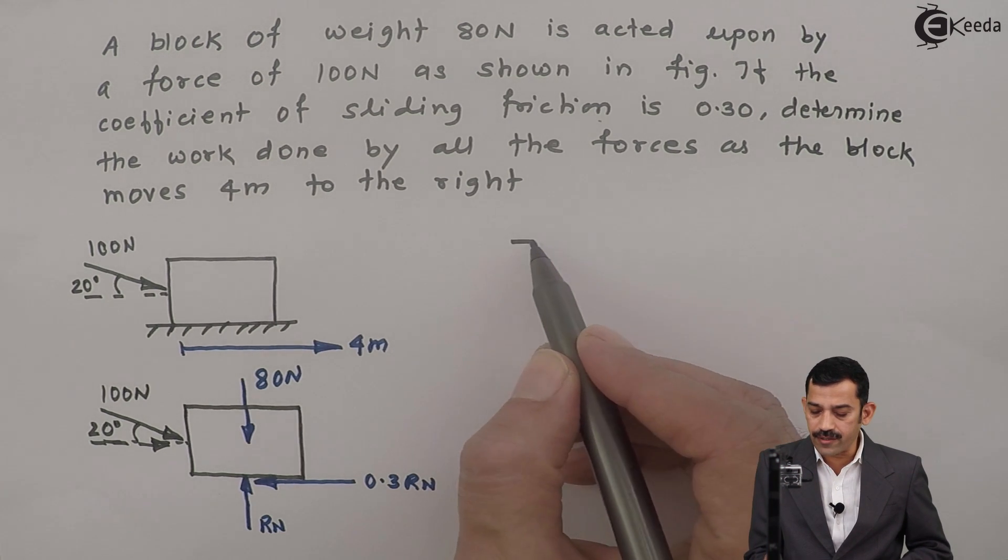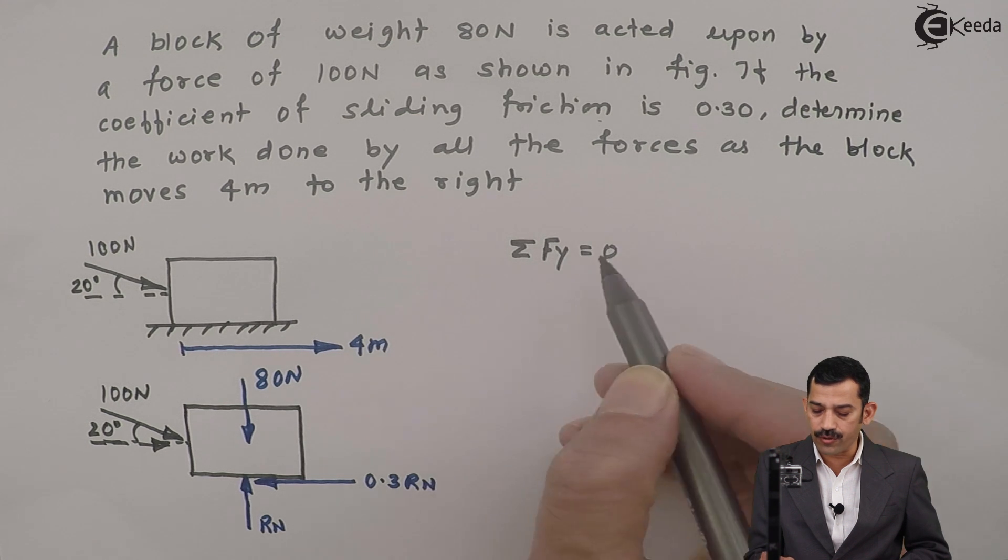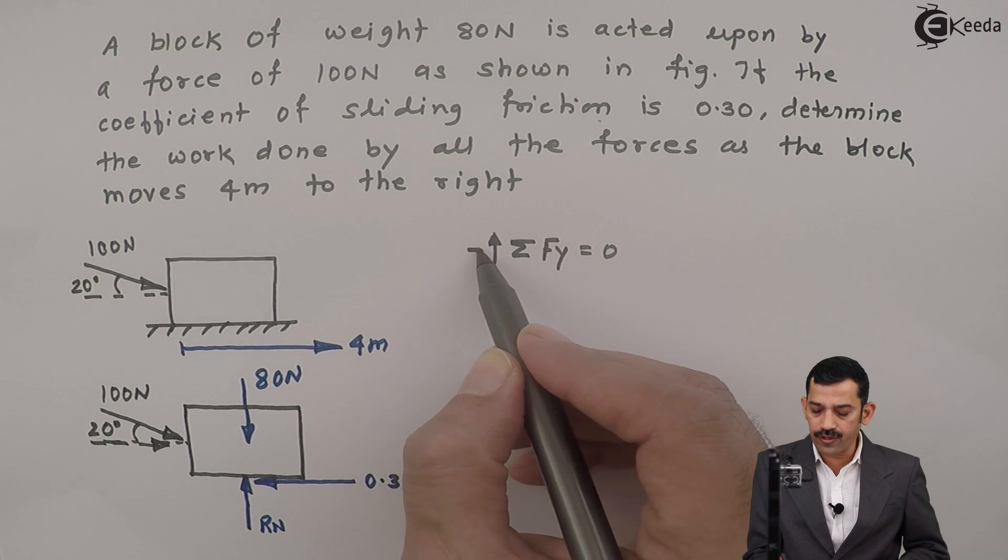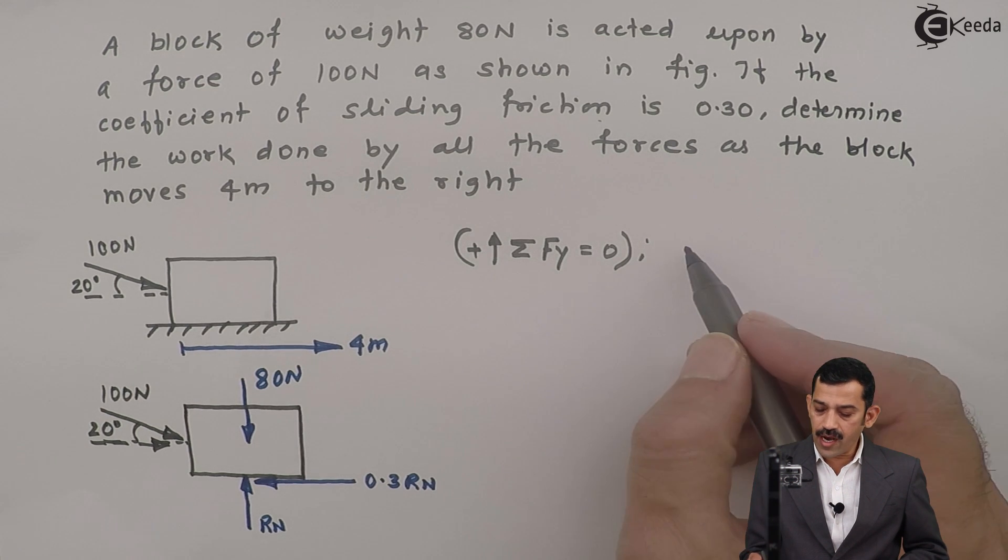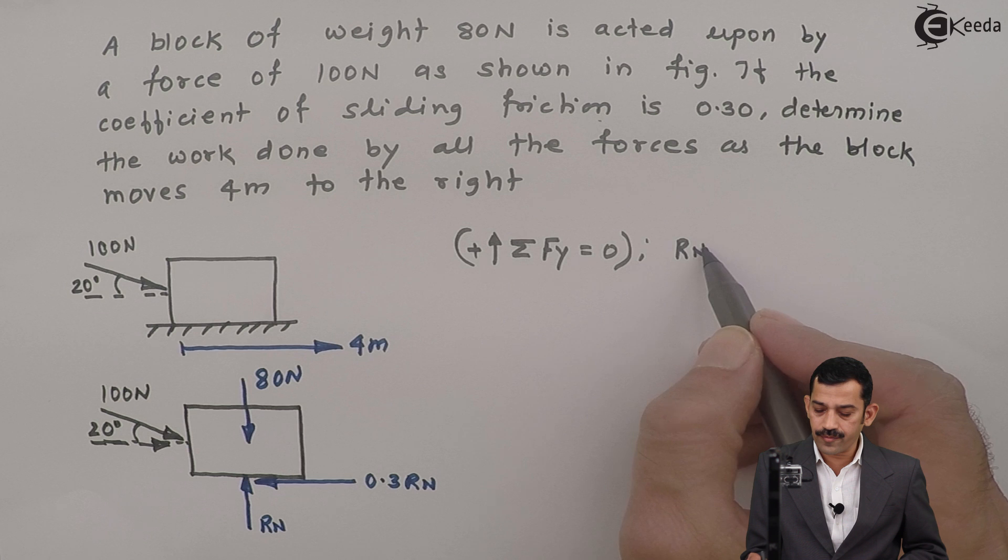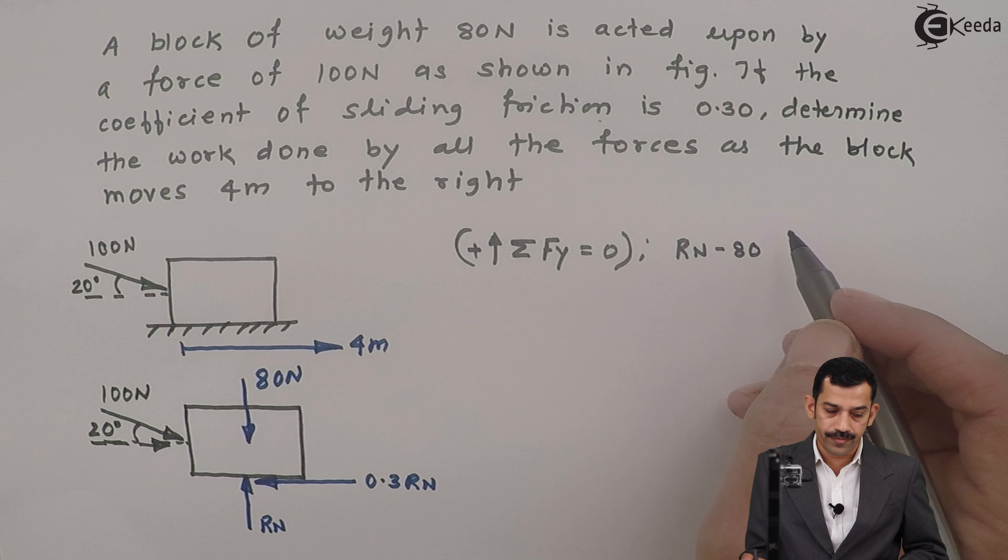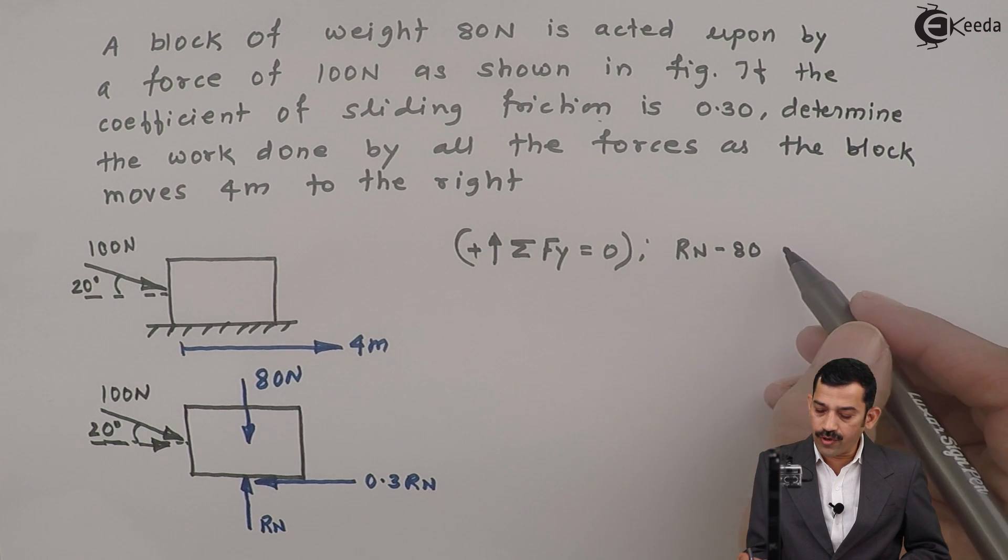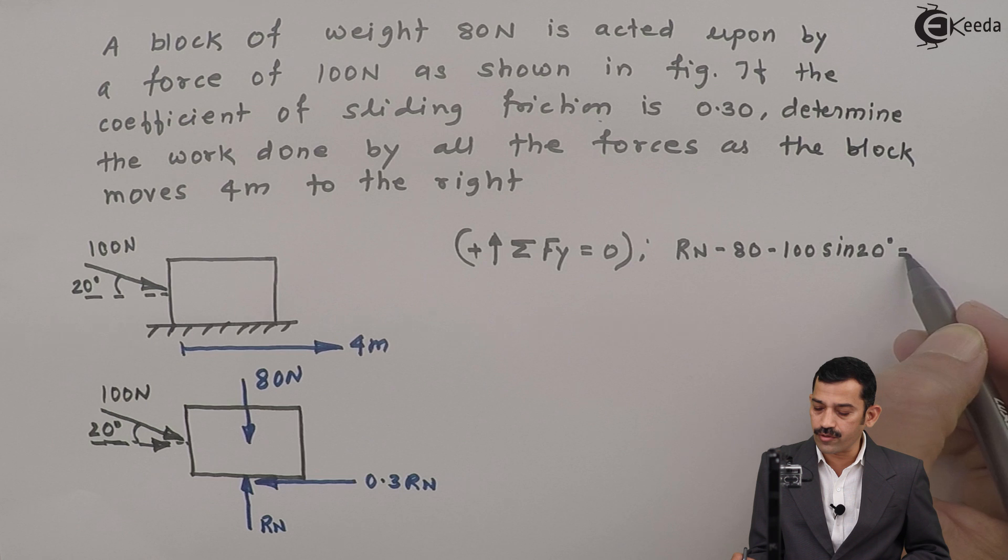First applying equation along y axis. Summation of Fy equal to 0. Assuming upward force is positive. What we will get here? RN vertically upward positive minus weight downward negative. Then component of 100 downward minus 100 sin of 20 equal to 0.